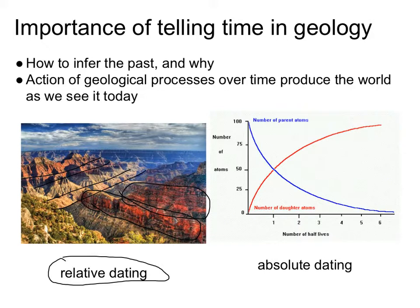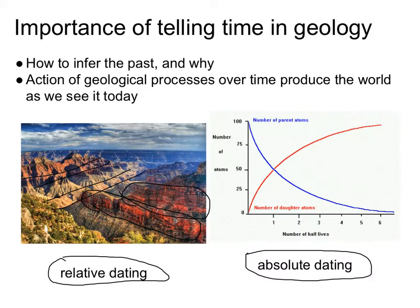We want to generally combine this relative approach to telling different ages with some technique that gives us a way to put absolute times on the different landscapes, on the different strata, the different layers in a geological formation, and the different rocks. On Earth, our best absolute dating technique is to look at the decay of radioactive elements — radiometric dating.